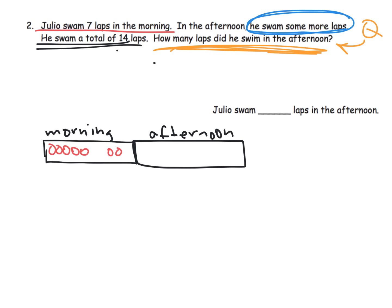And then he swam a total of 14 laps. So that means putting these two guys together is equal to 14. Now I can go back in and say, well, the morning was 7. And do we know what the afternoon was? No. So there's our question mark. And so here's one example of what the model would look like.